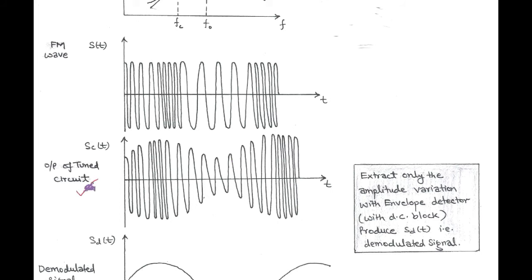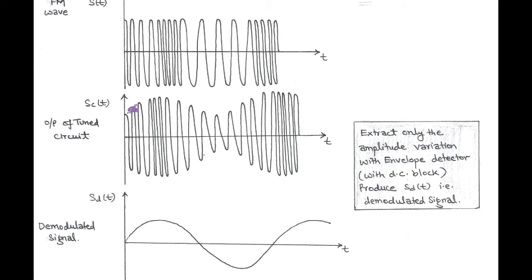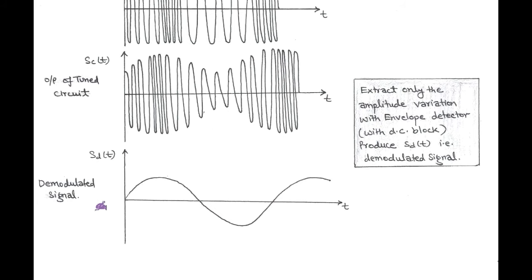As shown in the figure, this output signal has both amplitude as well as frequency modulated characteristics. But here we extract only the amplitude variations using the envelope detector. After passing through the envelope detector, which is the second stage of the frequency discriminator, we get the demodulated signal. This demodulated signal corresponds to the message signal denoted by S_D. In this method of FM demodulation, we extract only the amplitude variation by discriminating the frequency, hence it is called the frequency discrimination method.